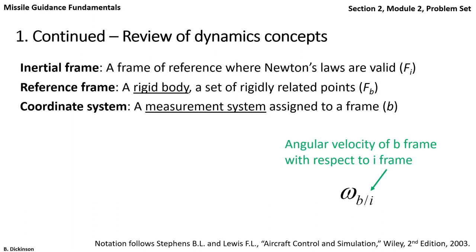The angular velocity vector represents the rate of rotation of one frame with respect to another. We denote that with the symbol omega. And the subscript denotes the rotation of frame body with respect to the inertial frame.